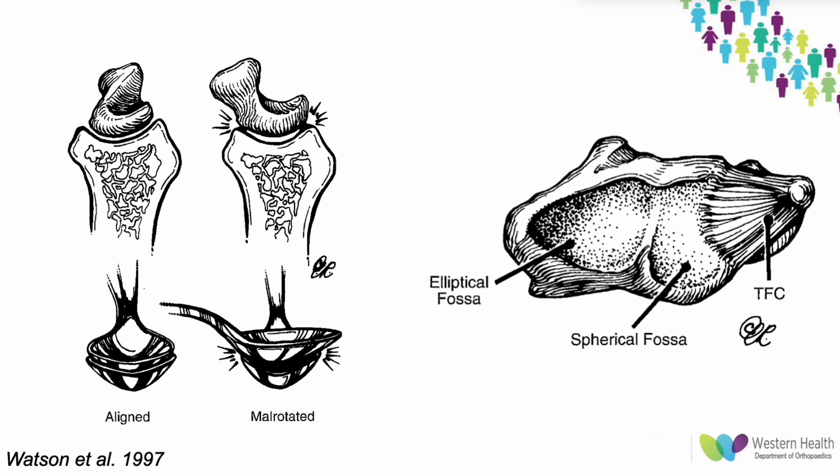This image comes from the first natural history study of scapholunate ligament injuries, published by Kirk Watson in 1997. He likened the scaphoid's proximal articular surface to a teaspoon. Normally, flexion and extension occur with full articular contact in an elliptical fossa. However, abnormal scaphoid posturing due to loss of ligamentous stability leads to increased radioscaphoid joint forces and point loading on either side of the radius, driving degenerative change and subsequent capitolunate shear loading — the origin of the SLAC wrist.